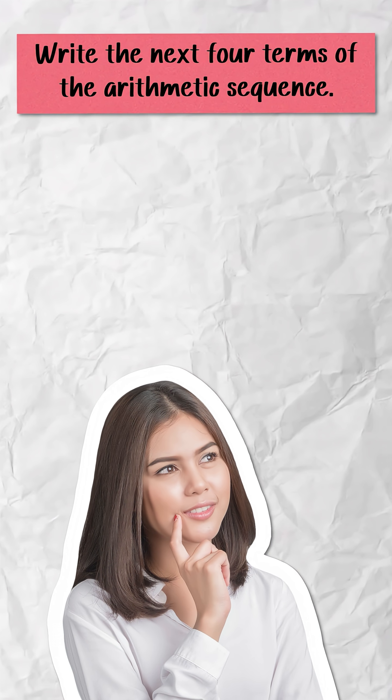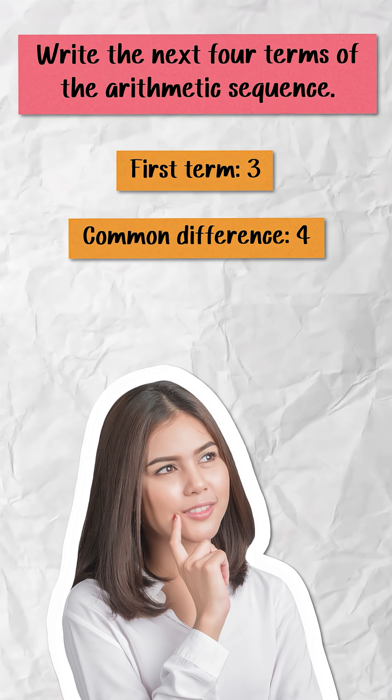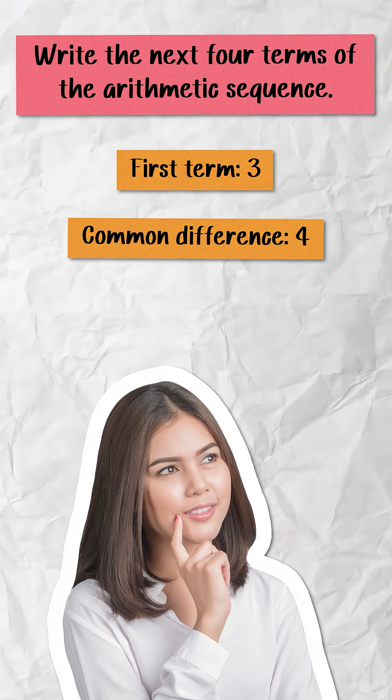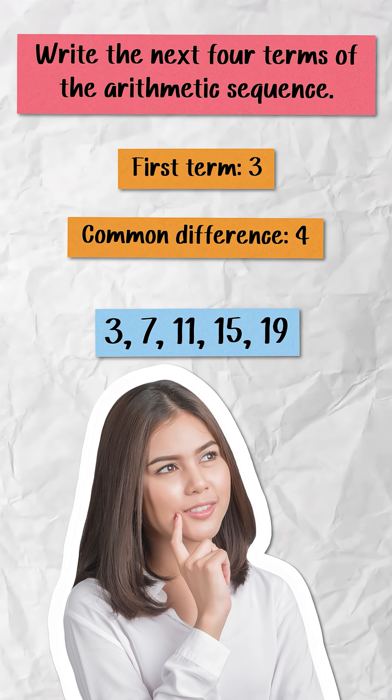Now, let's compare that question to this one. Write the next four terms in this arithmetic sequence where the first term is 3 and the common difference is 4. The answer to this one would be 7, 11, 15, and 19.